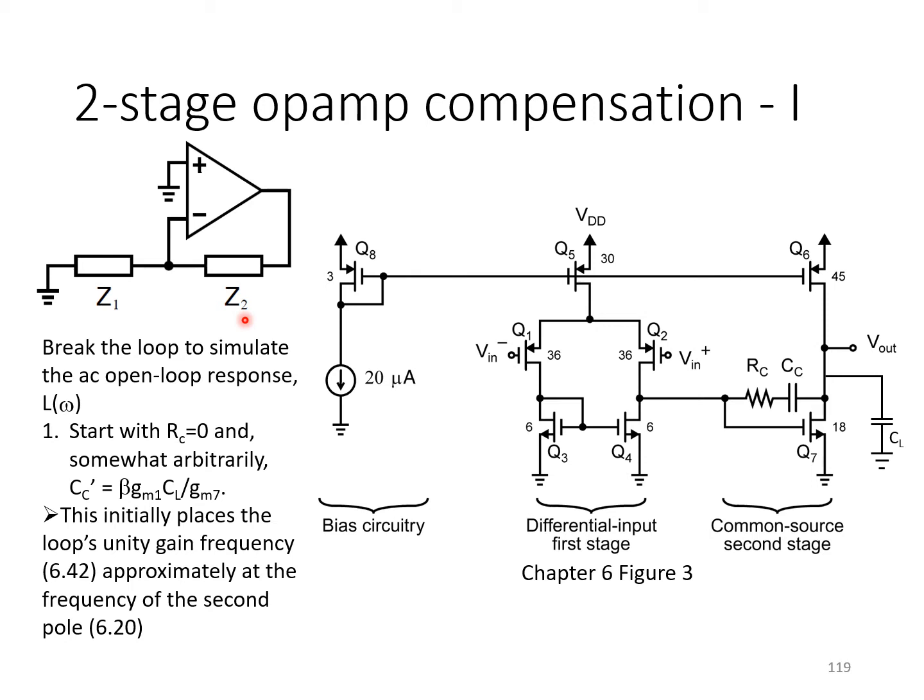In any case, when we start out with an uncompensated two-stage op-amp, we're likely to have two poles in pretty close proximity to each other, one due to the output of the first stage and one at the output of the second stage. So we want to start out with some nominal value for CC, something that's not too ridiculous, but just a nominal value that splits the poles at the output of the first and second stage a little bit so that we can clearly distinguish them when looking at the frequency response of the op-amp.